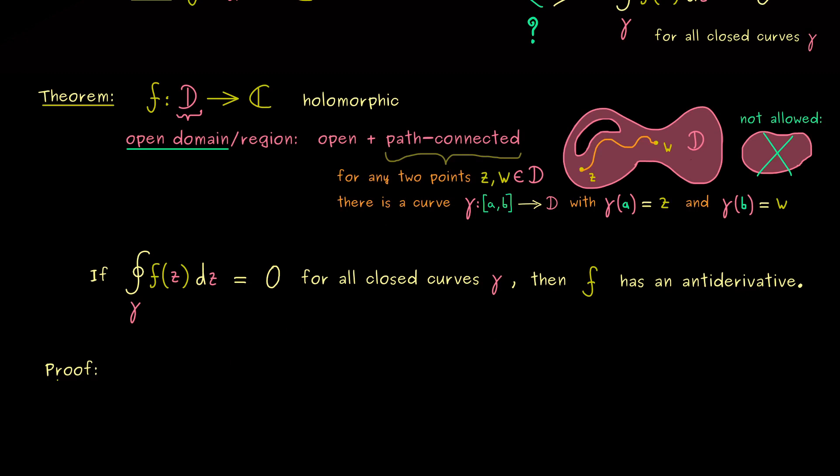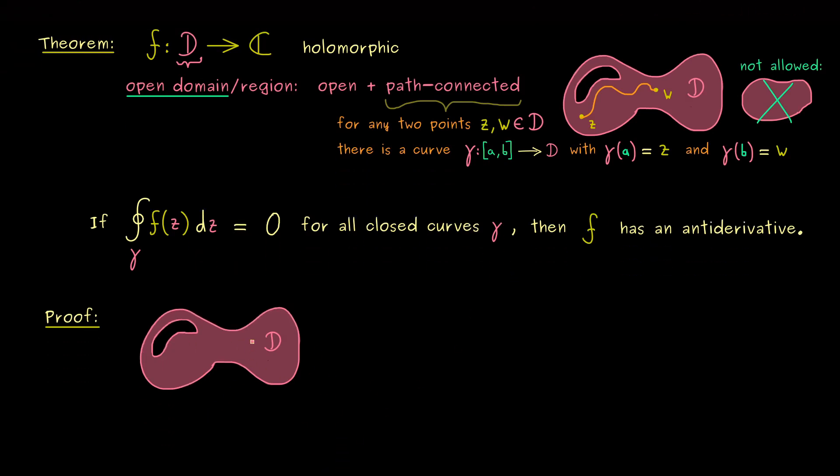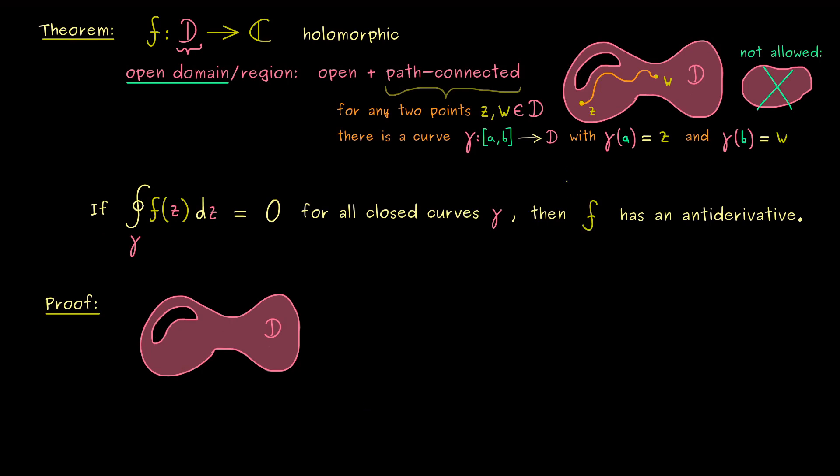This will be a good exercise for us because we need to work with the contour integrals. Now, the first idea for the proof here is that we fix a given point Z₀ in the set D. You see, since we can connect any point with any other point, we can just fix a given starting point. So in other words, for any other point Z in the domain, we can find a curve gamma, and maybe we should call it gamma_Z.